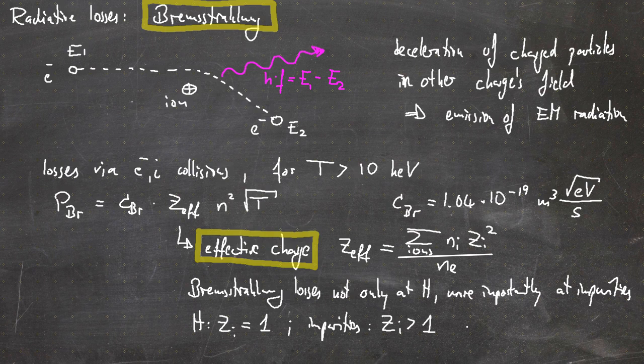In this video we talked about the energy confinement time τ_E = W/P, the plasma energy content as the sum of electron and ion kinetic energies, the power balance and conditions for a self-sustained plasma, and radiative losses via bremsstrahlung. The effective charge number Z_eff plays an important role, and bremsstrahlung losses have a squared dependence on charge number, meaning impurities must be minimized. In the next video we will derive and define further key parameters in fusion research.